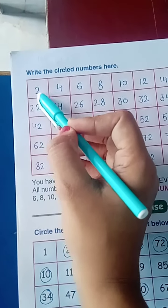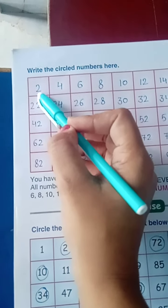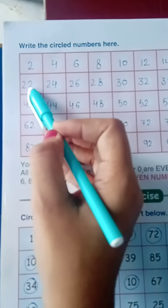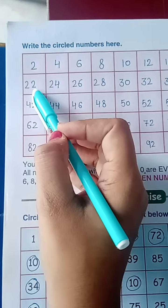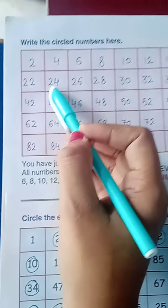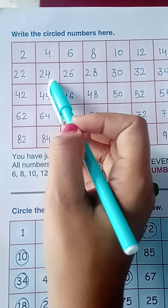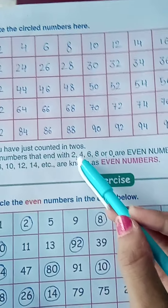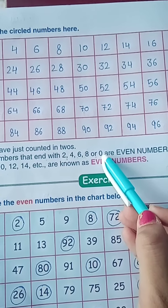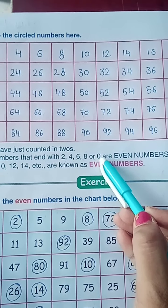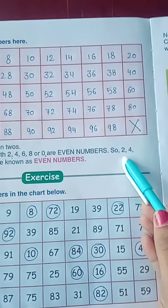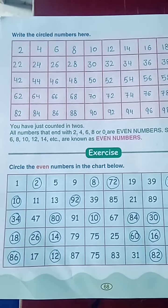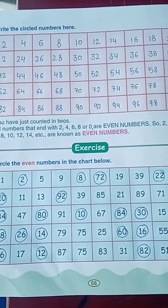Like this — look at the ones place. Once mein 2 hai, so it's an even number. Now ones and tens: once mein 2 hai, so it's an even number. Yahaan once mein 4 hai — so it's an even number. Yahaan 6 hai — it's an even number. That means digits ending with 2, 4, 6, 8, or 0 are even numbers. So 2, 4, 6, 8, 10, 12, 14 are known as even numbers.